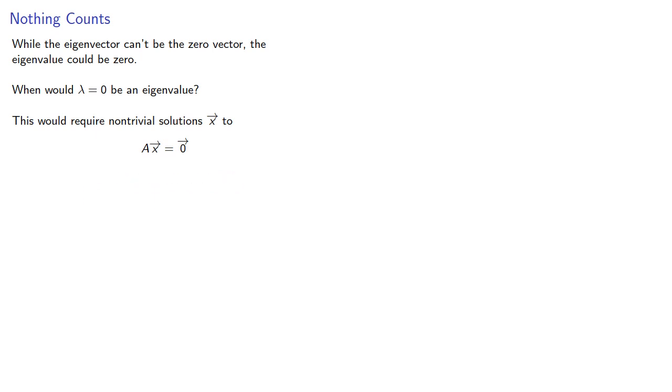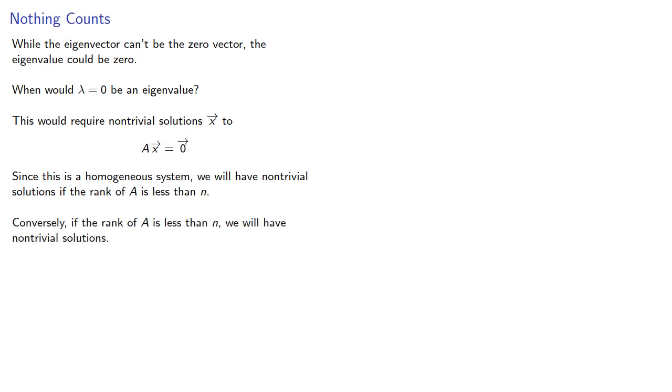Since this is a homogeneous system, we'll have non-trivial solutions if the rank of A is less than n. We might say that A is a rank-deficient matrix. Conversely, if the rank of A is less than n, we will have non-trivial solutions, and lambda equals zero would be an eigenvalue.